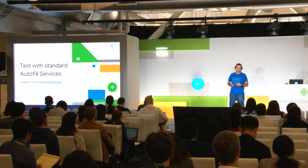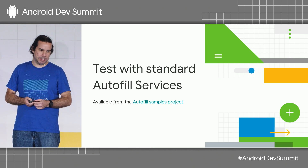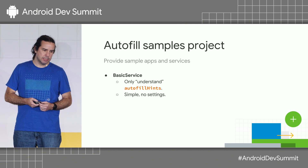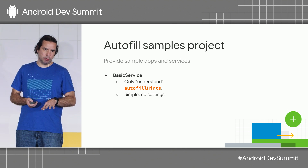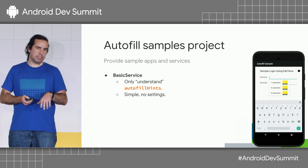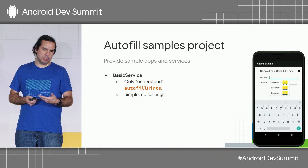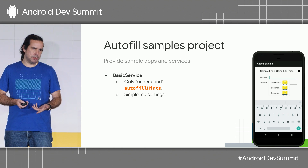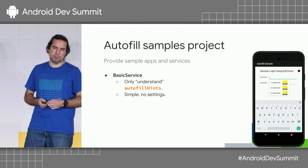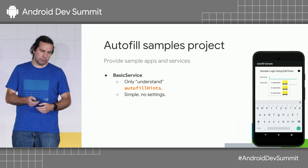My suggestion is to test using a standard Autofill service, and we provide some of them in the official samples hosted on GitHub. We provide a couple of Autofill service implementations. One of them is called Basic Service, which only understands Autofill hints. So if you're using autofill hints in your app and the user clicks on a field, you'll see a pop-up showing the username options, because you declared that field as username. On the other hand, if you're not using hints, the Basic Service won't show anything. It's also a pretty simple service — less than 200 lines of code — so if you're interested in understanding how an Autofill service works, it's a good example.